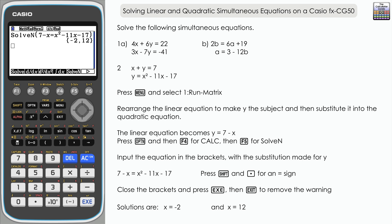We've got our two x values, so now we need to find the two corresponding y values. It's straightforward — just substitute back into one of the original equations. The linear equation is the most straightforward. For example, if x is negative 2, then negative 2 plus y equals 7, so y must be 9. So negative 2 and 9 are our first x and y values.